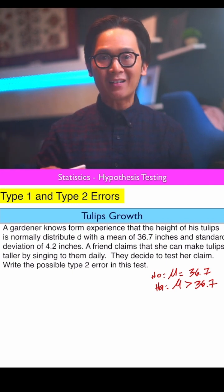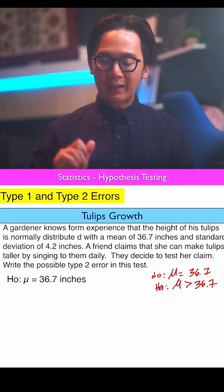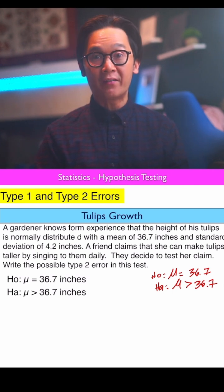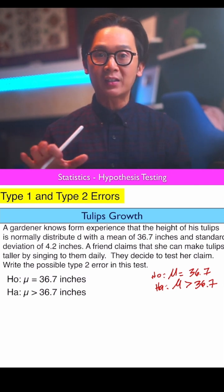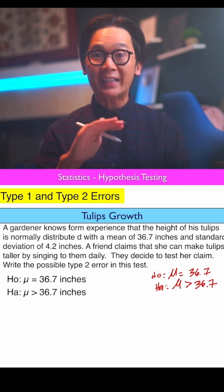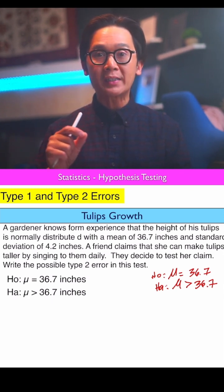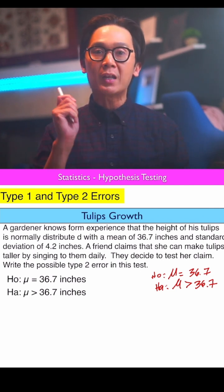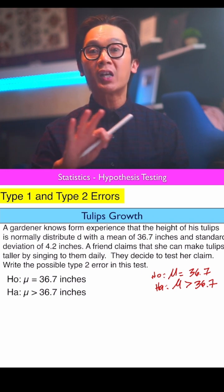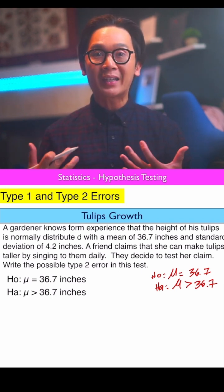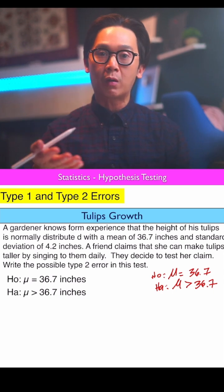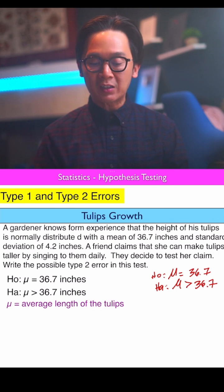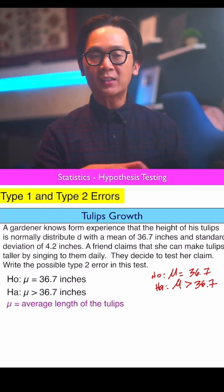For our null hypothesis H₀, we write: mu equals 36.7 inches. For the alternative hypothesis, since the claim is that singing makes tulips taller, we use an inequality — mu is greater than 36.7 inches. Remember: the null hypothesis always has the equal sign, and the alternative hypothesis always has an inequality symbol — greater than, less than, or not equal to — depending on the keywords in the problem.